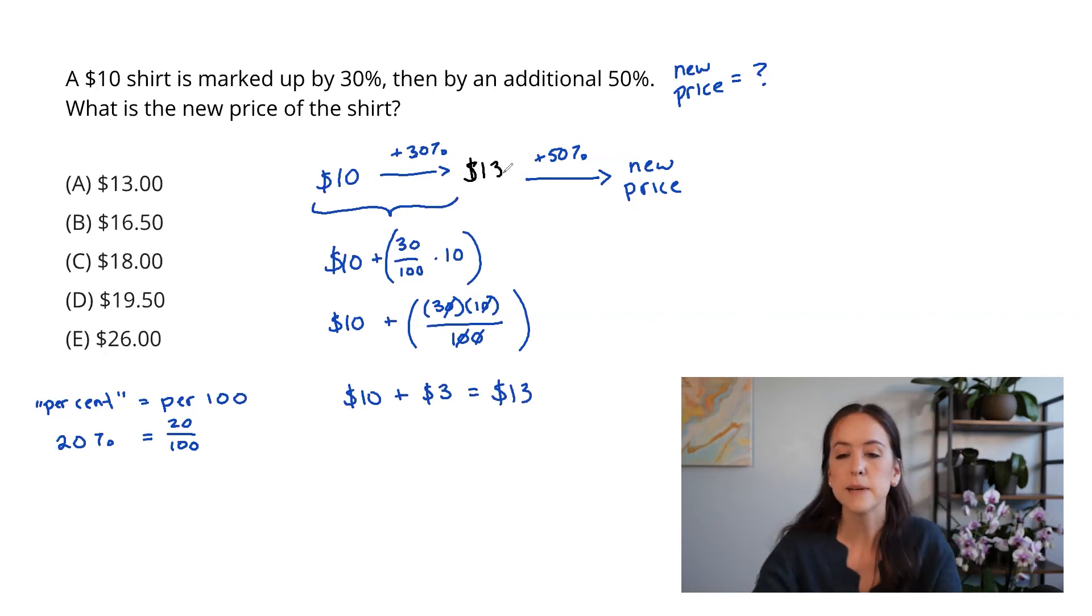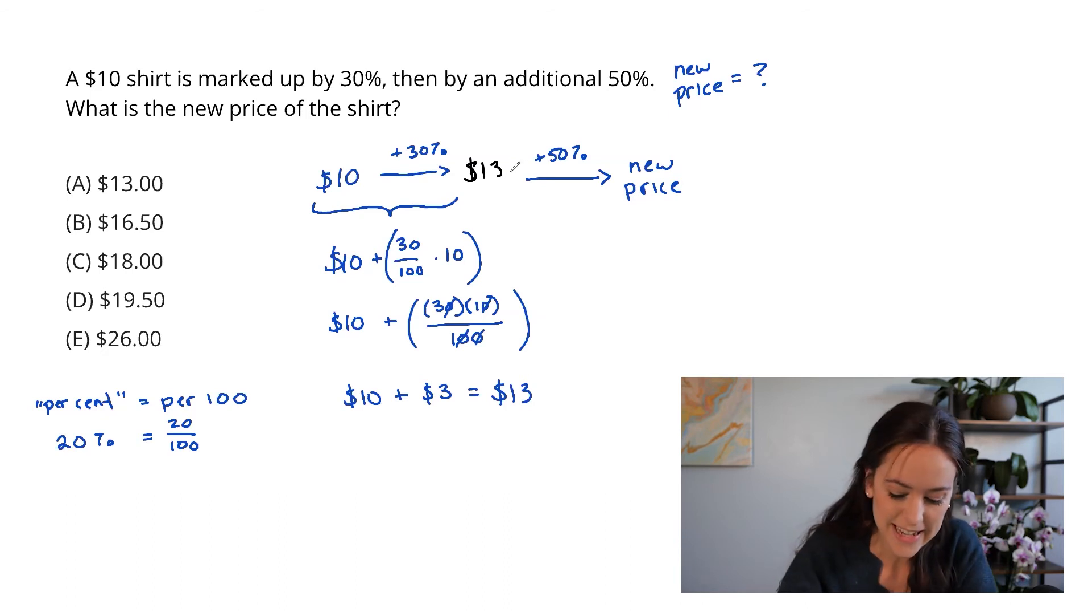This is the same reason we can't just add 30% and 50% and say we're increasing the whole thing by 80%. We have to go one at a time. That's like when you go to a store and everything's 50% off, but then you have a coupon for an additional 50% off. You'll notice it's actually not 100% off. They don't give that to you for free. Same deal here. We're going to take 50% of 13, not of the original 10.